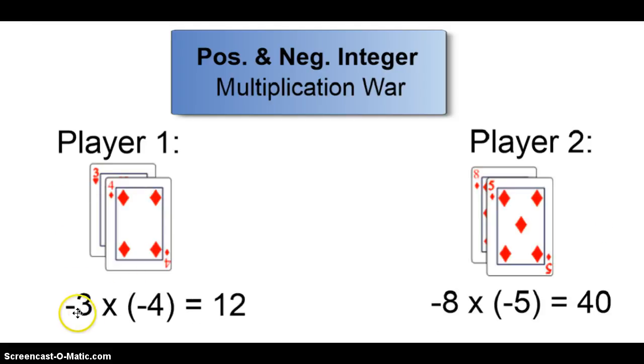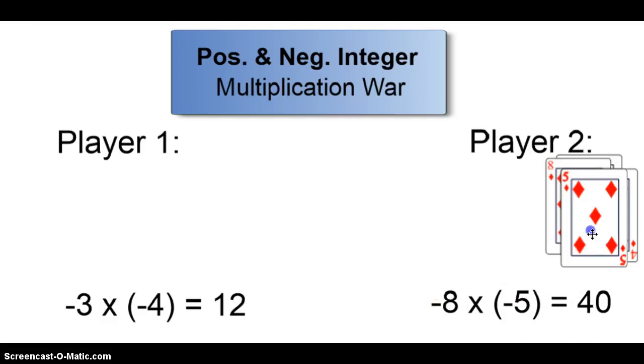Player two flips up two. Negative three times negative four is positive twelve. And negative eight times negative five is positive forty. Forty is greater than twelve, so player two wins again.